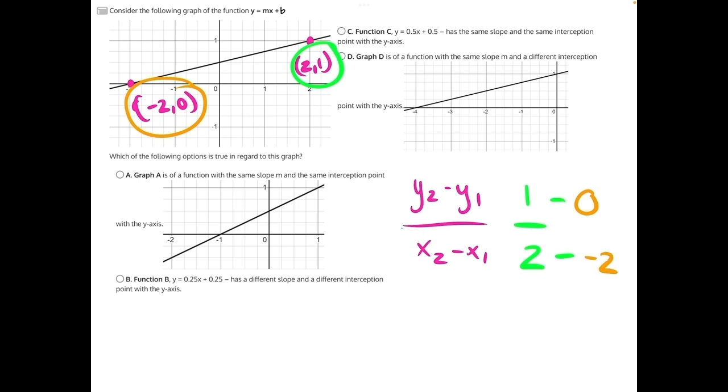Subtracting a negative is the same as adding a positive. So on our numerator, we'll have 1 minus 0, which is 1, and 2 plus 2 on our denominator, which will be 4. So our slope here is m equals 1 fourth. So now we can compare this more easily to the rest of our answer choices.